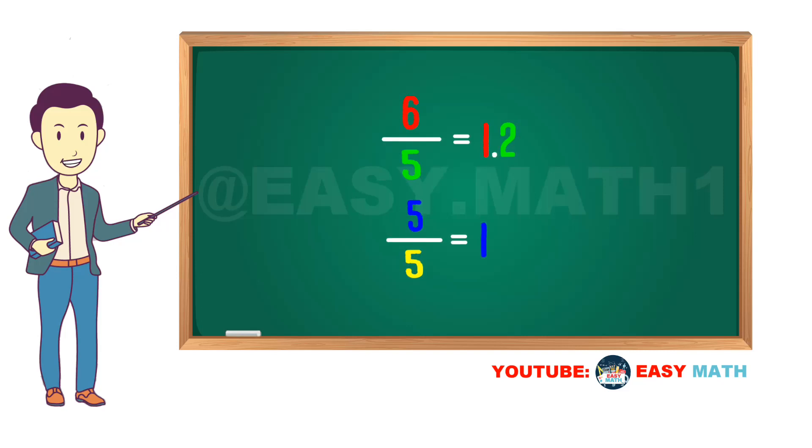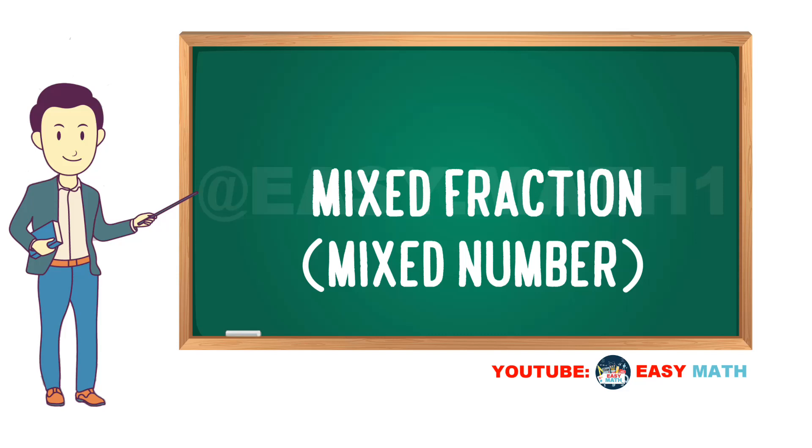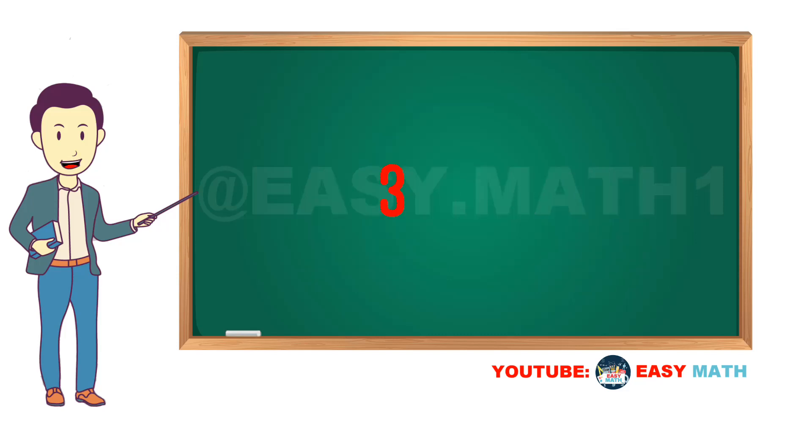A mixed fraction or mixed number is the combination of a whole number and a fraction, like three and two thirds. It's basically an improper fraction that's converted into a mixed fraction.